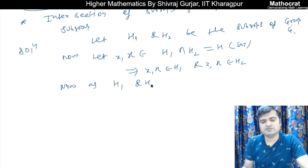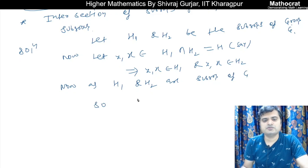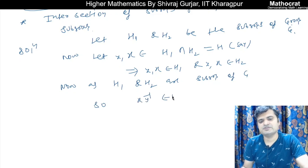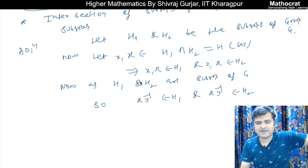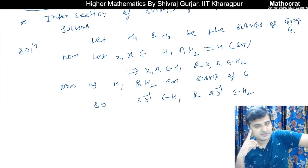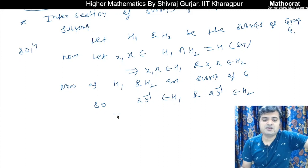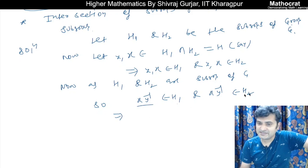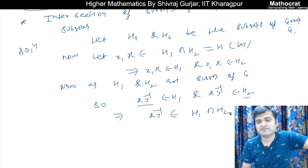H1 and H2 are subgroups of G. So XY⁻¹ belongs to H1, and XY⁻¹ belongs to H2, by the definition of subgroup — if X, Y belong to H then XY⁻¹ belongs to H, if H is a subgroup of G. So X inverse lies in H1 as well as H2, which means X inverse is part of H1 intersection H2.